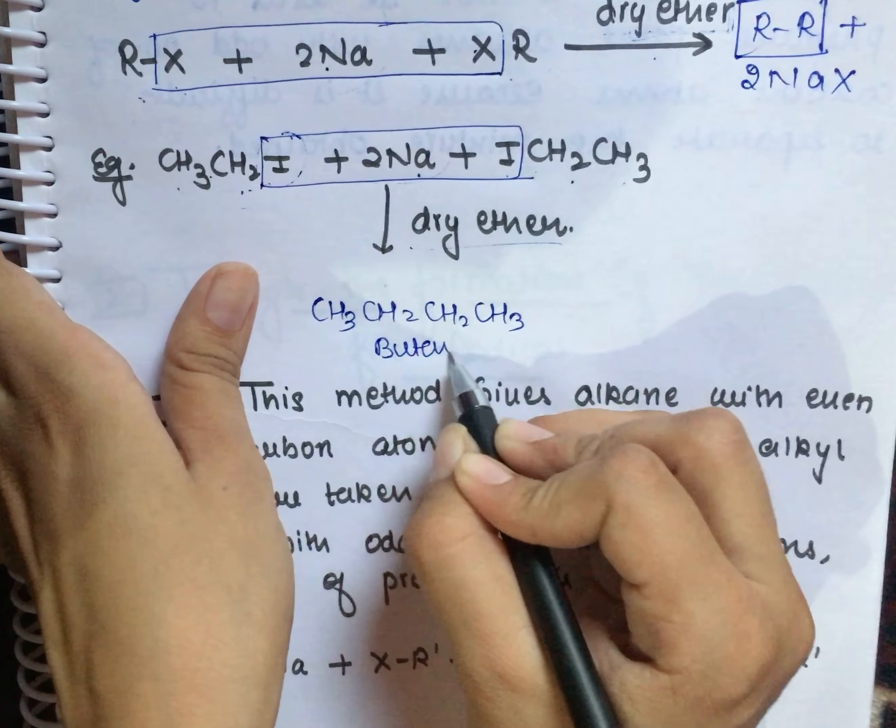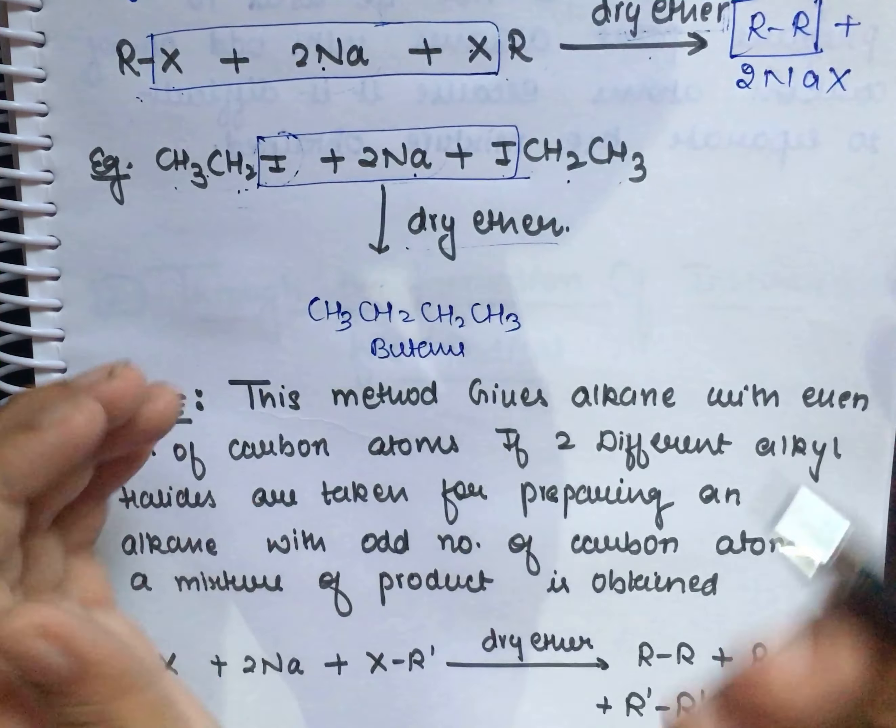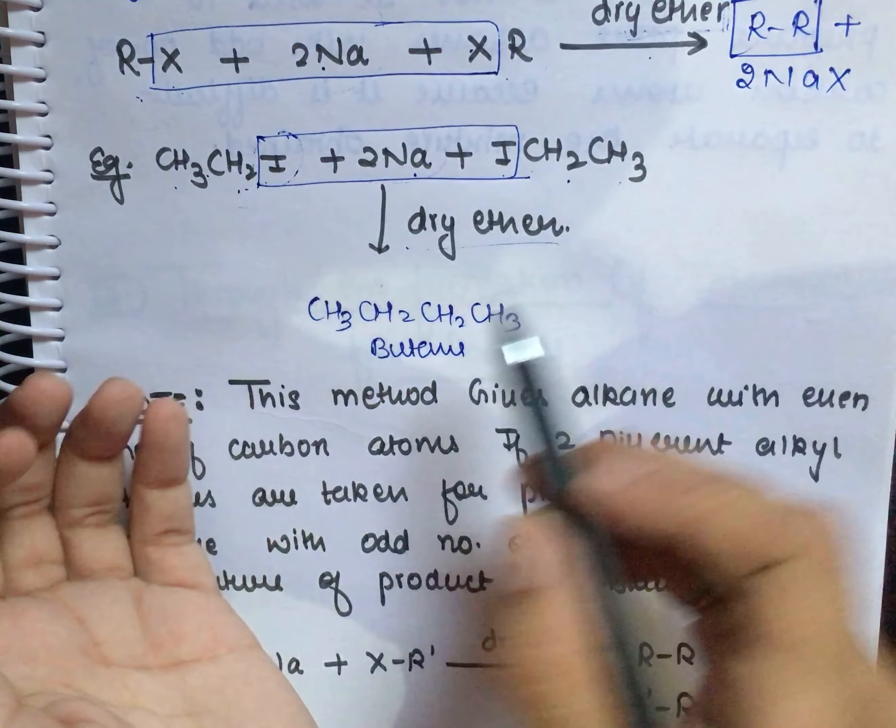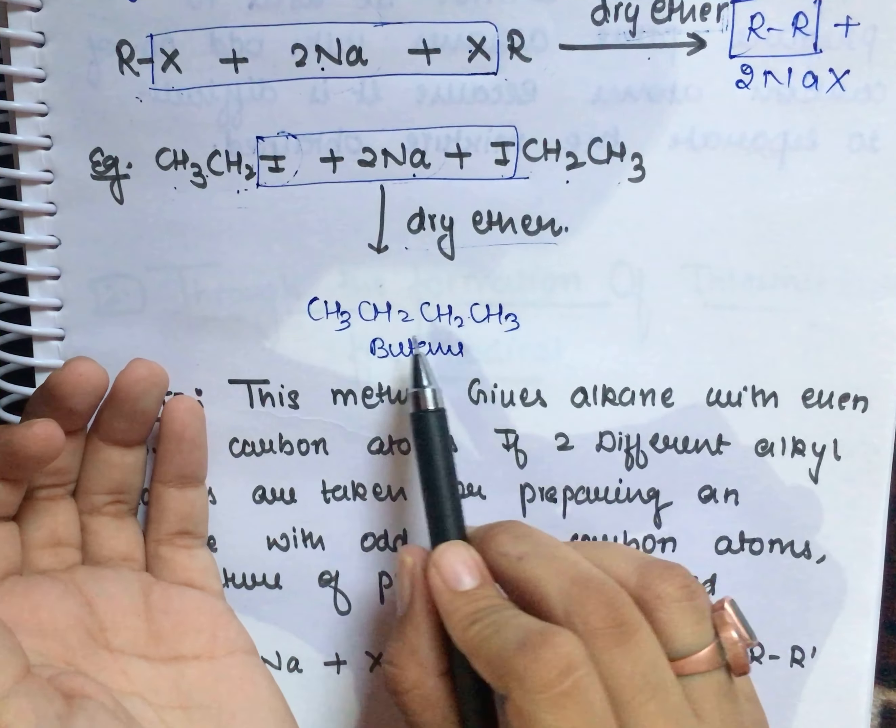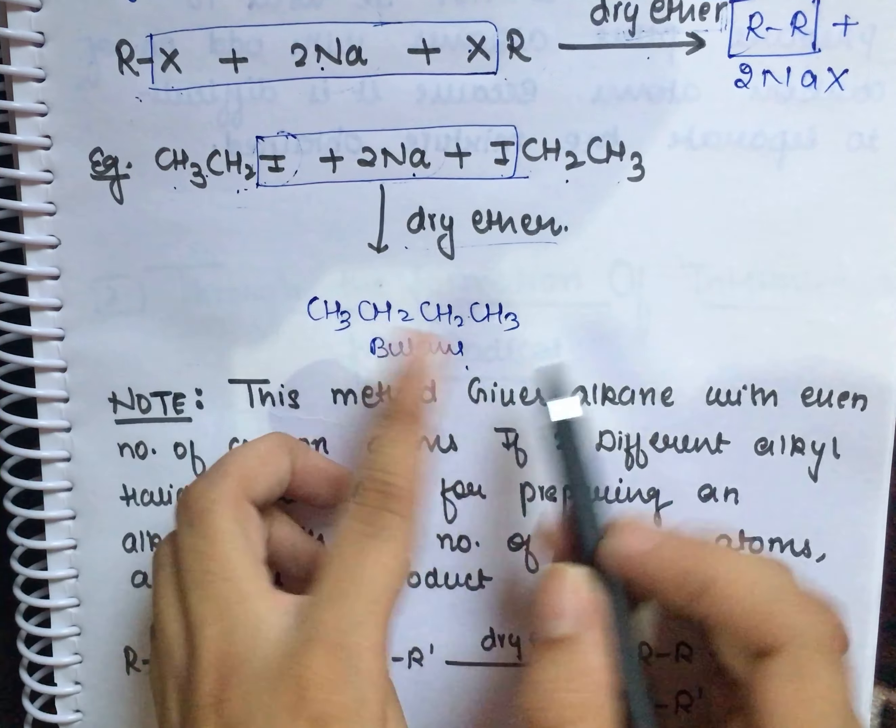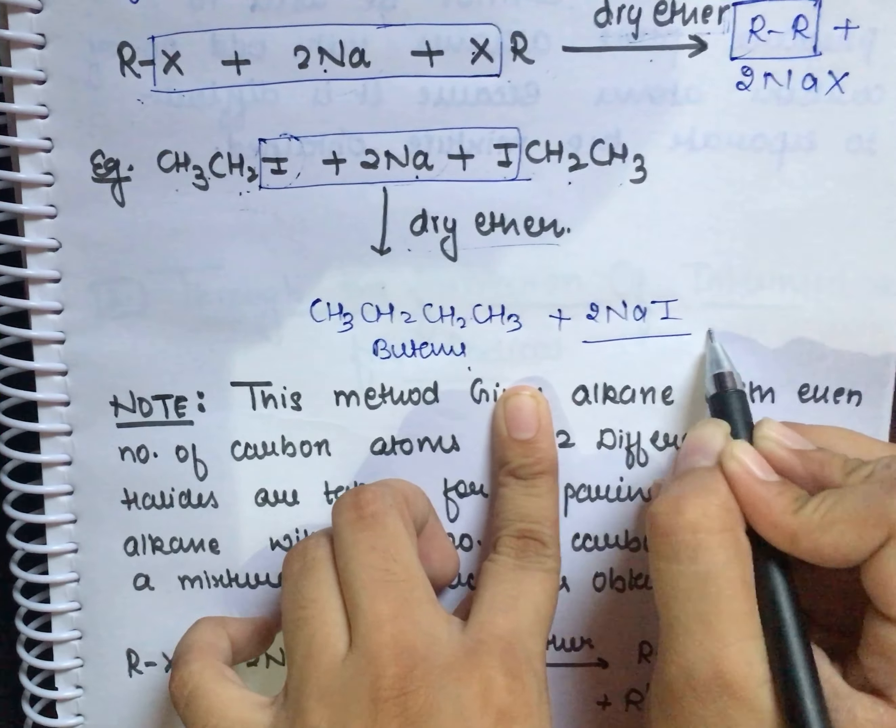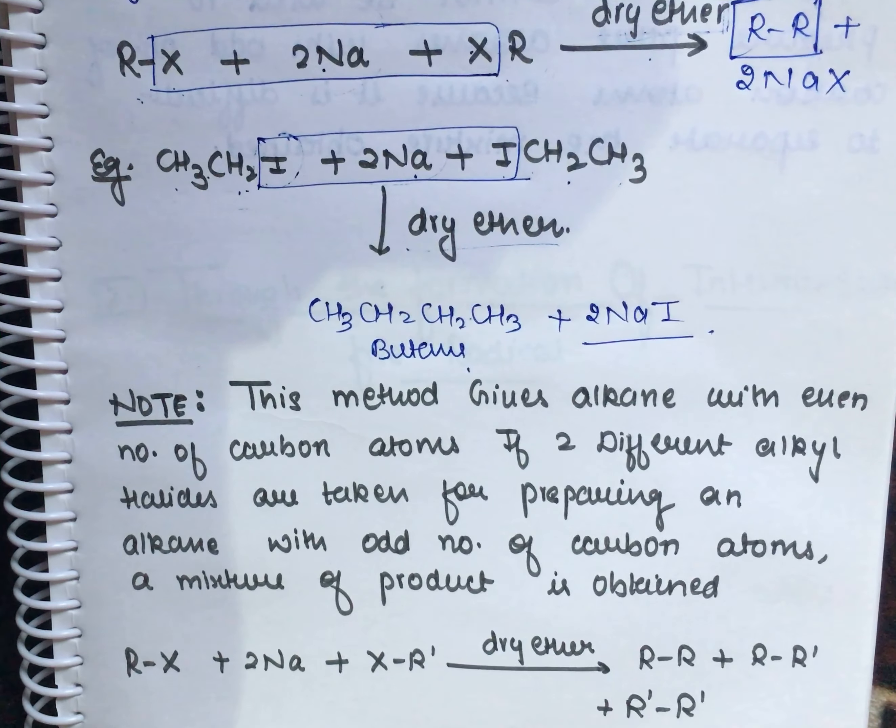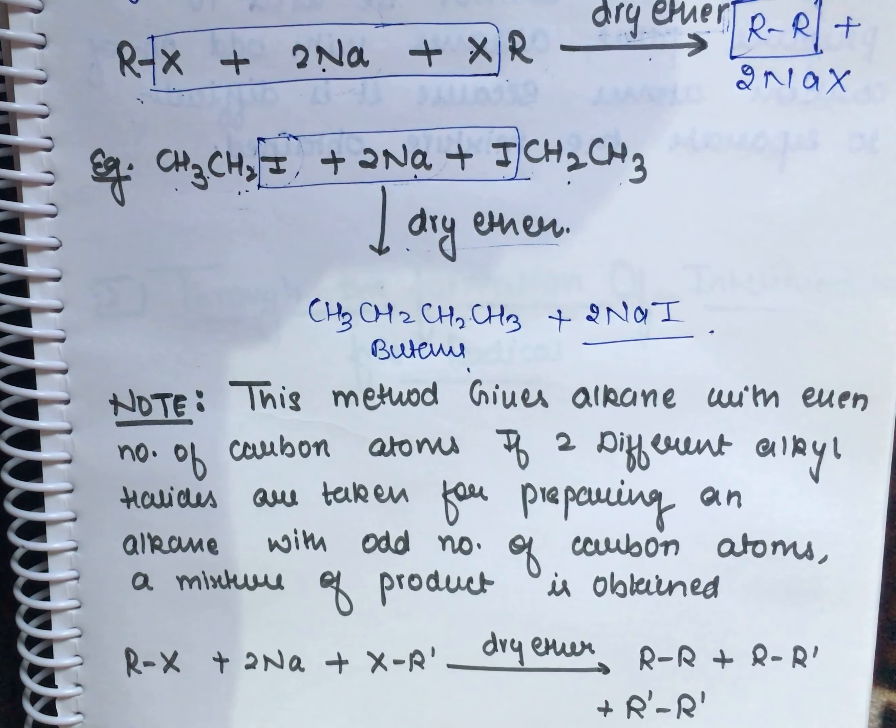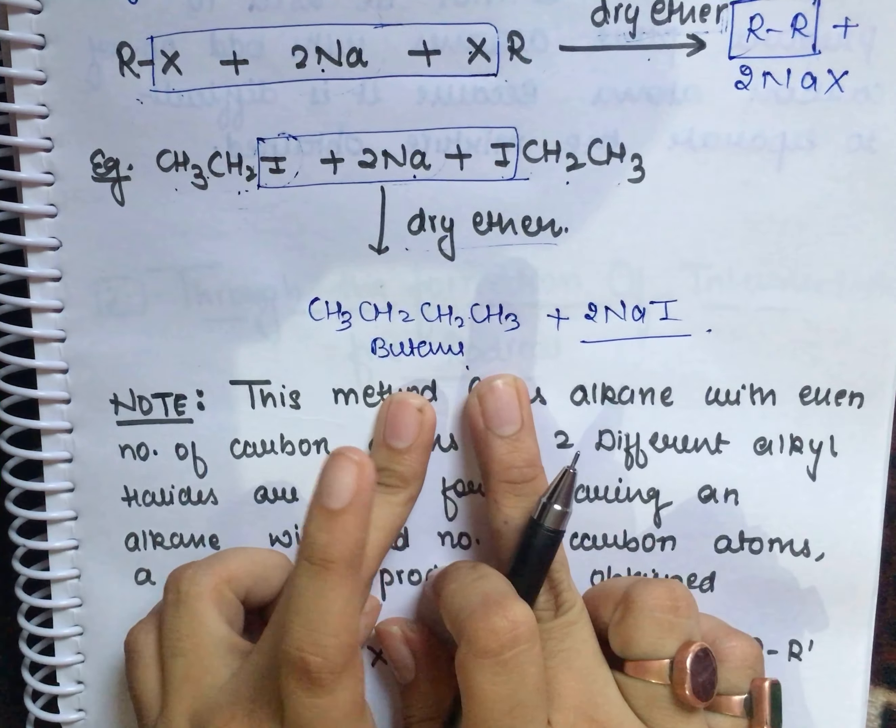After removing two moles of NaI, we will get the alkane product where both alkyl groups are joined together.